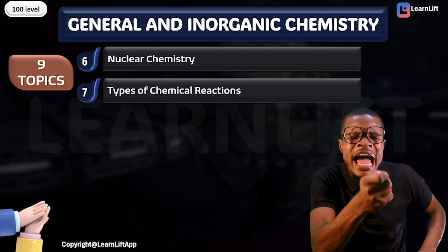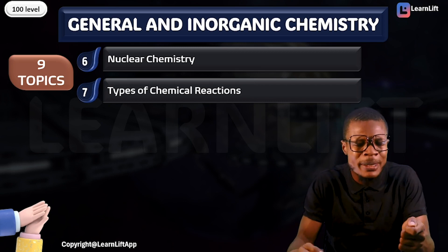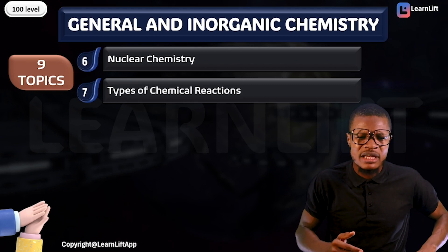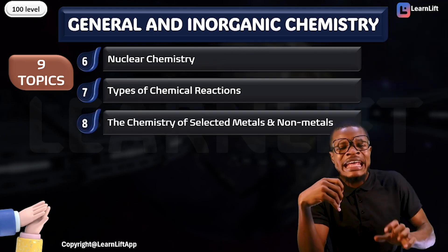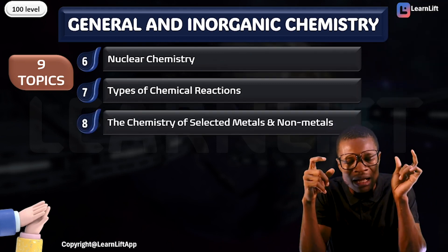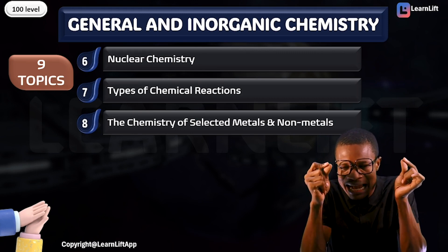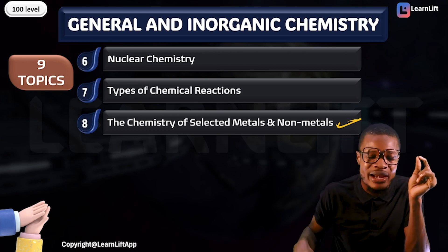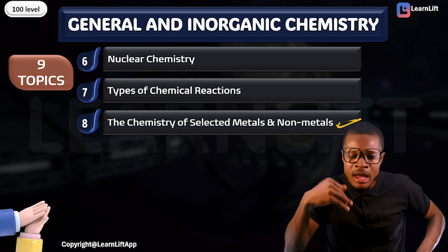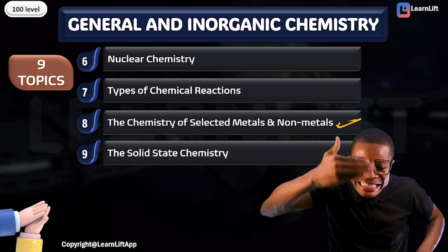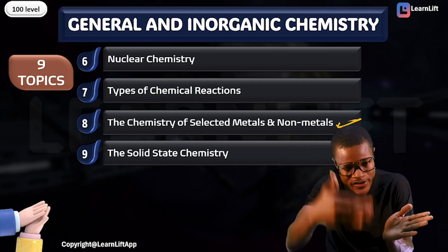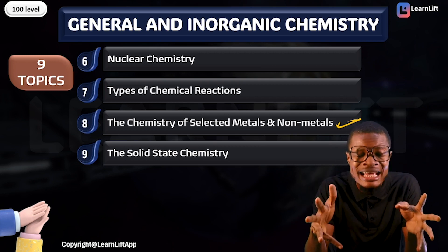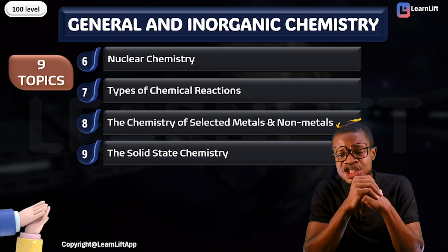After that, I'll walk you through the types of chemical reactions — your double displacement, your double decomposition — explain and analyze all of them one after the other. Then we go into the Chemistry of Selected Metals and Non-metals. We'll look at the aspects that are examined in your first semester. Other components are for second semester. After that, we're going to look at Solid State Chemistry as it relates to your first semester, and the second semester aspects will be kept for then.